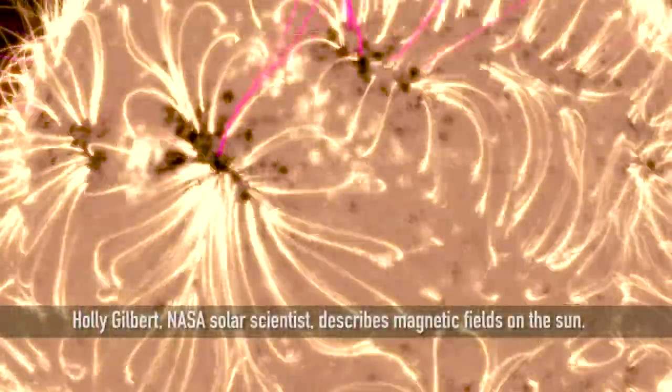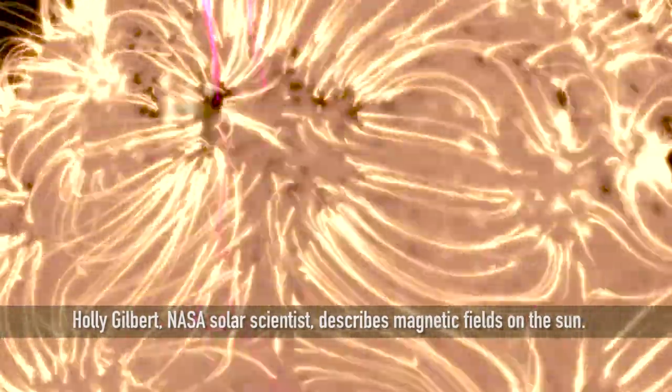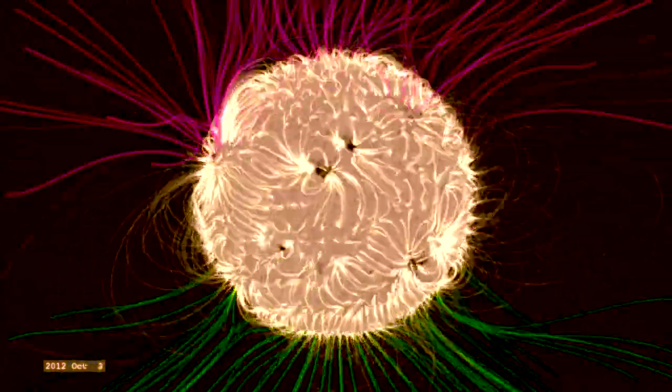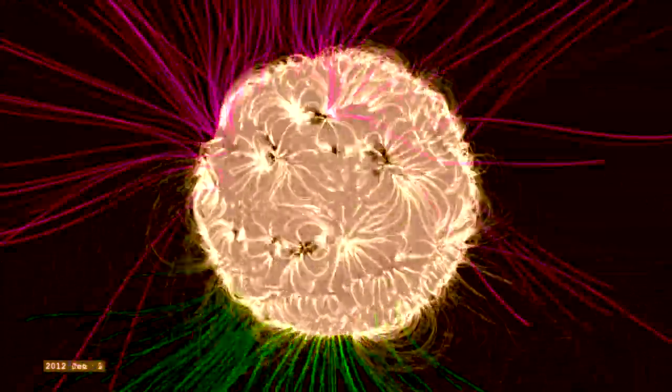The sun is a beautifully magnetically driven star, but we can't actually see magnetic field lines. They're essentially invisible and so we have to turn to models in order for us to see the global magnetic structure of the sun.